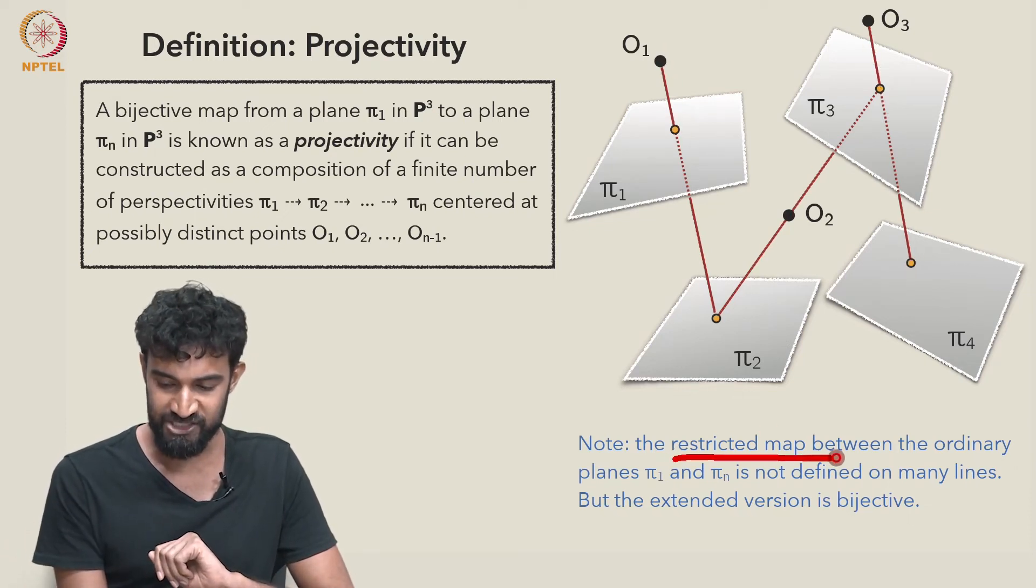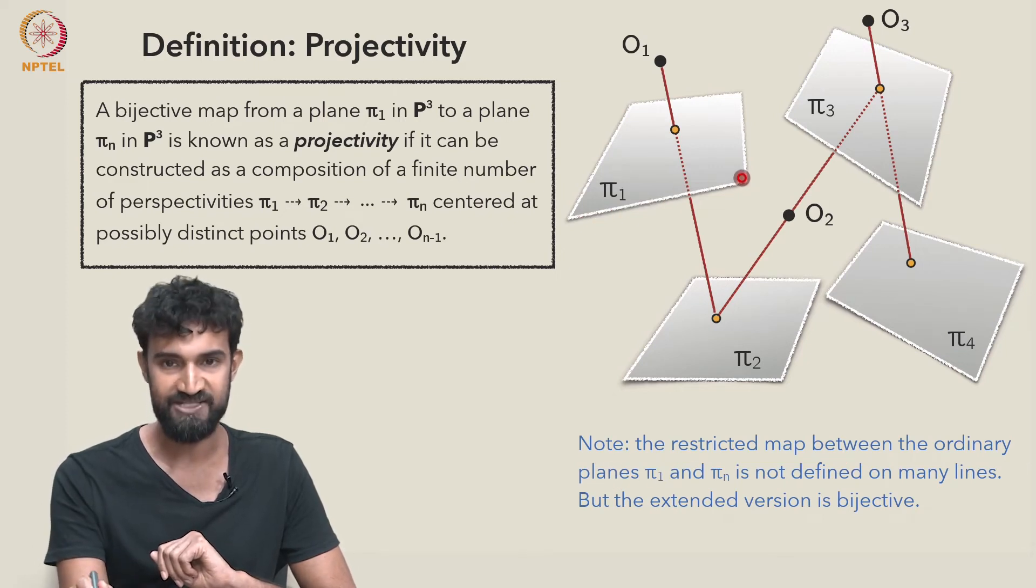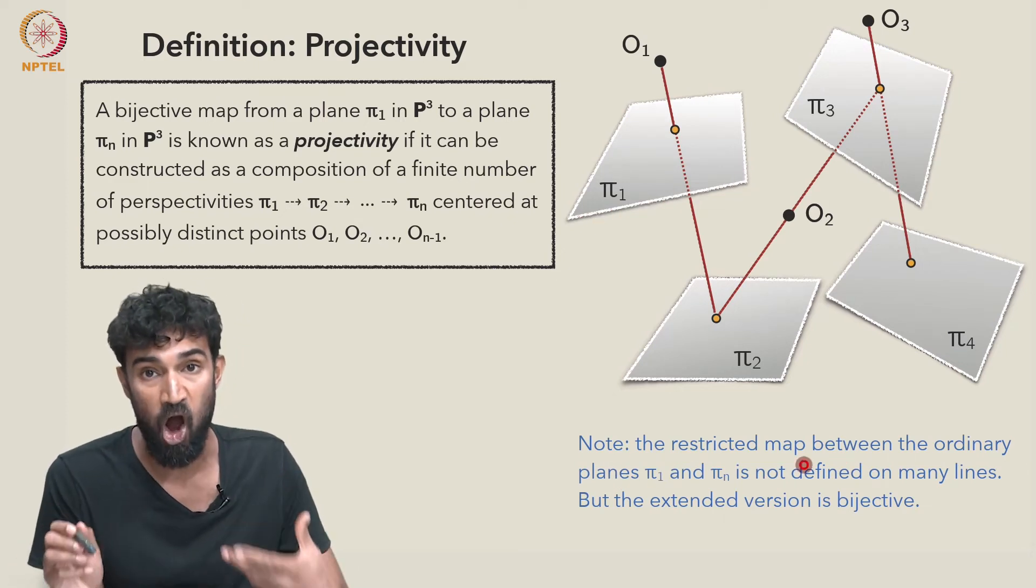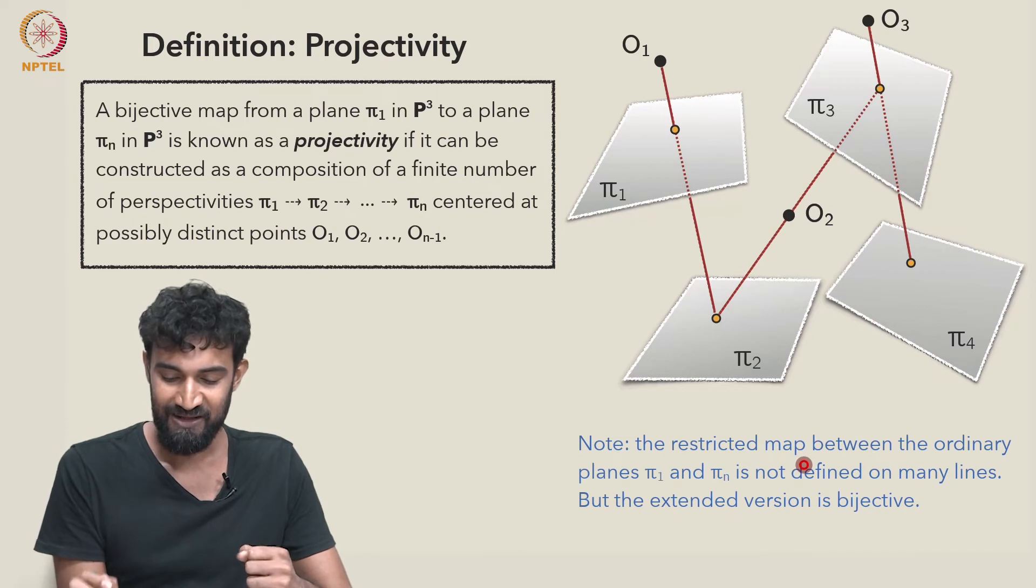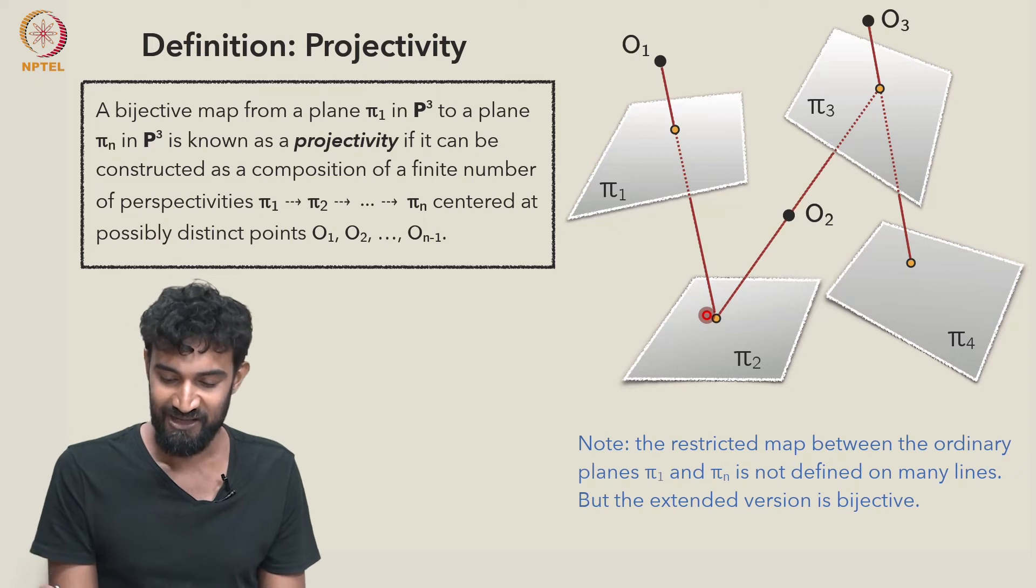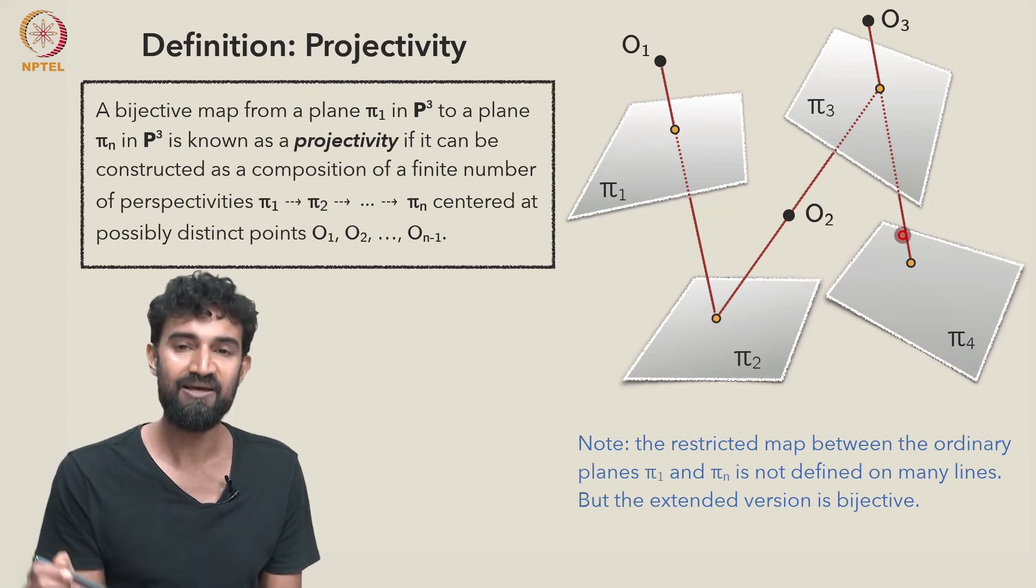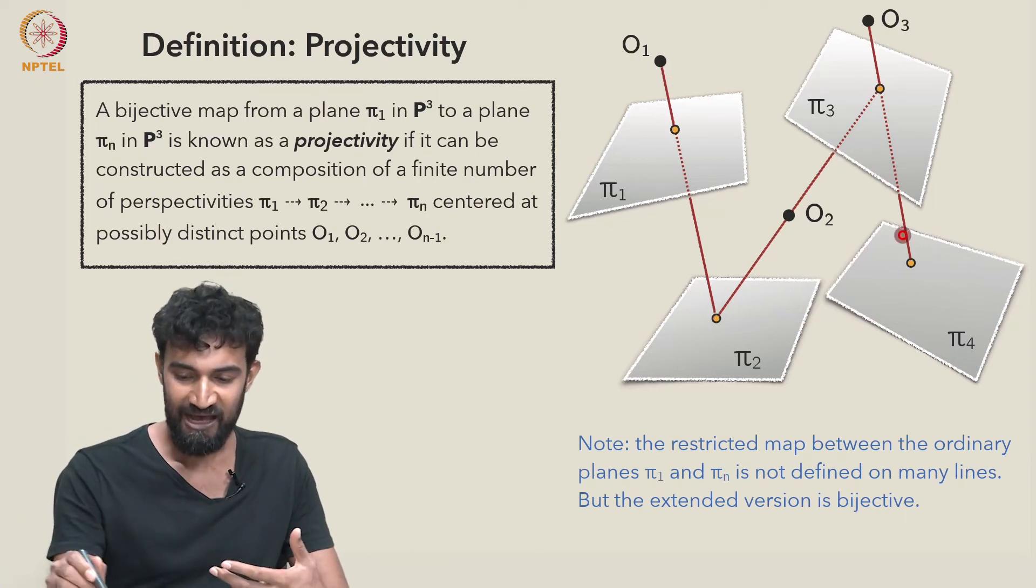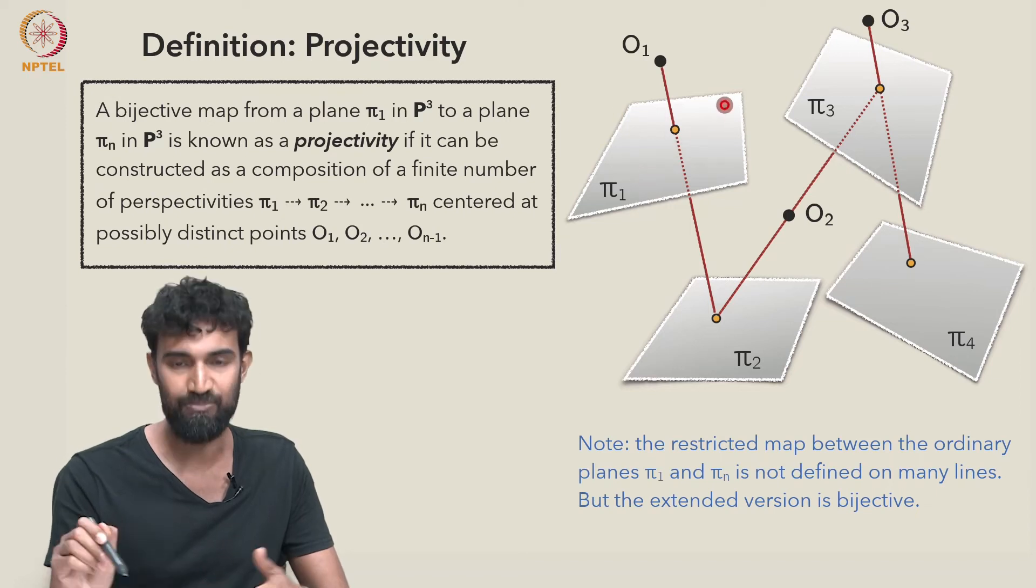But of course if we restrict our map to ordinary planes in the ordinary Euclidean space R³, then none of these are going to be bijective, they're each going to have point lines where they're not defined. And the composition is going to fail to be defined on multiple lines within π₁.